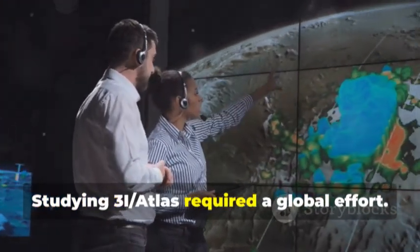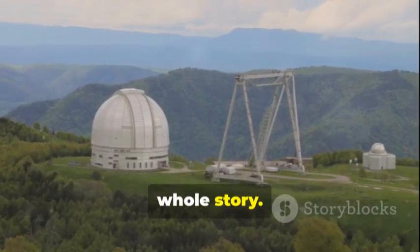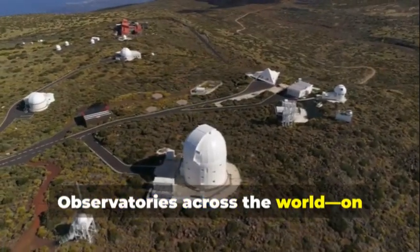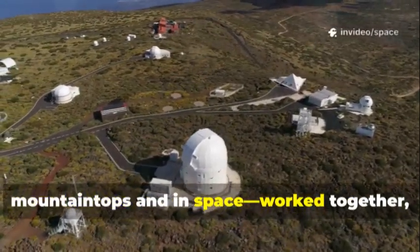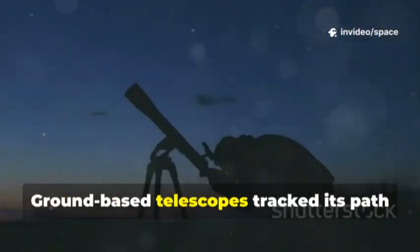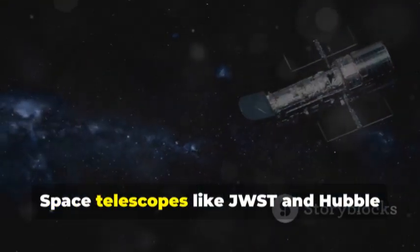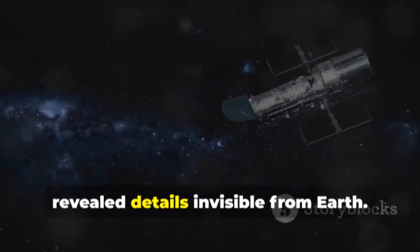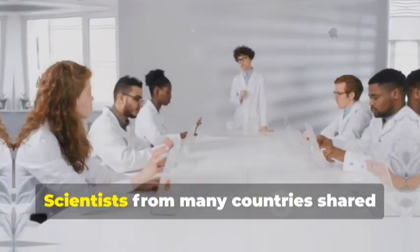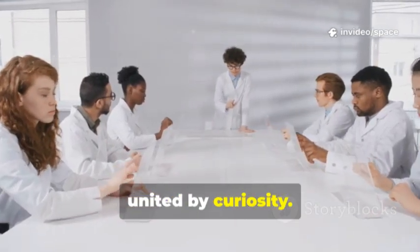Studying 3i-Atlas required a global effort. No single telescope could capture the whole story. Observatories across the world, on mountaintops and in space, worked together. Each adding a piece to the puzzle. Ground-based telescopes tracked its path and analyzed its gases. Space telescopes like JWST and Hubble revealed details invisible from Earth. Scientists from many countries shared data and ideas, united by curiosity.